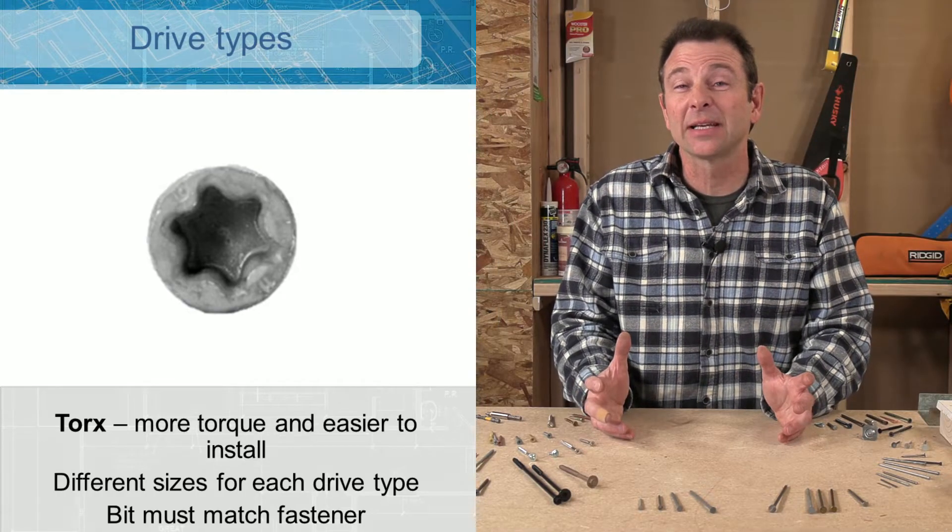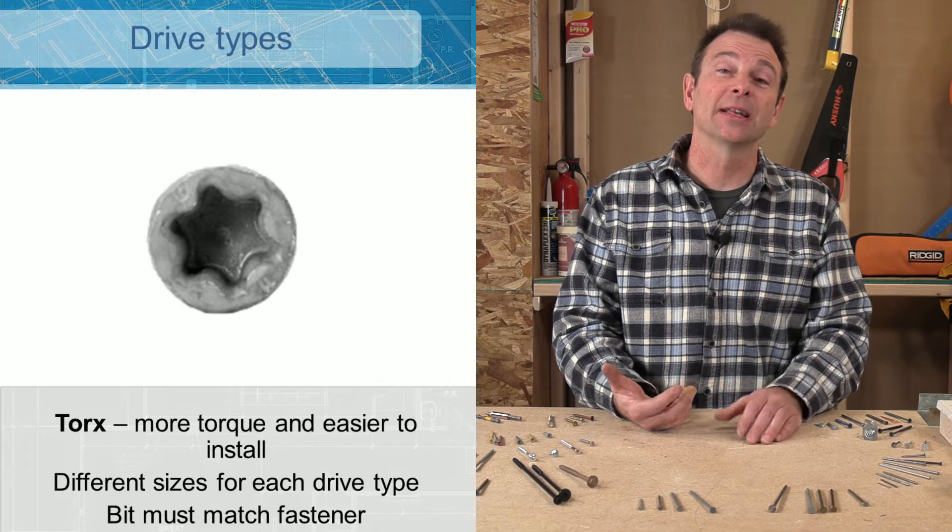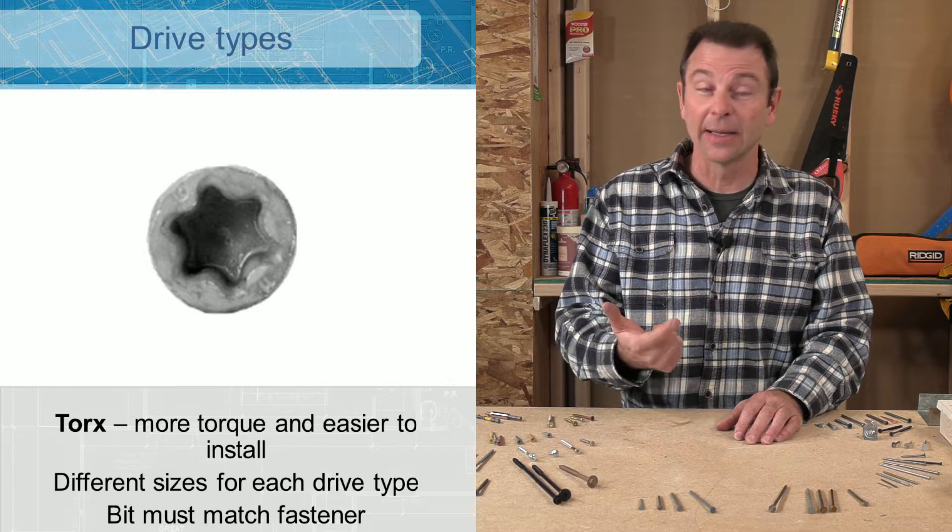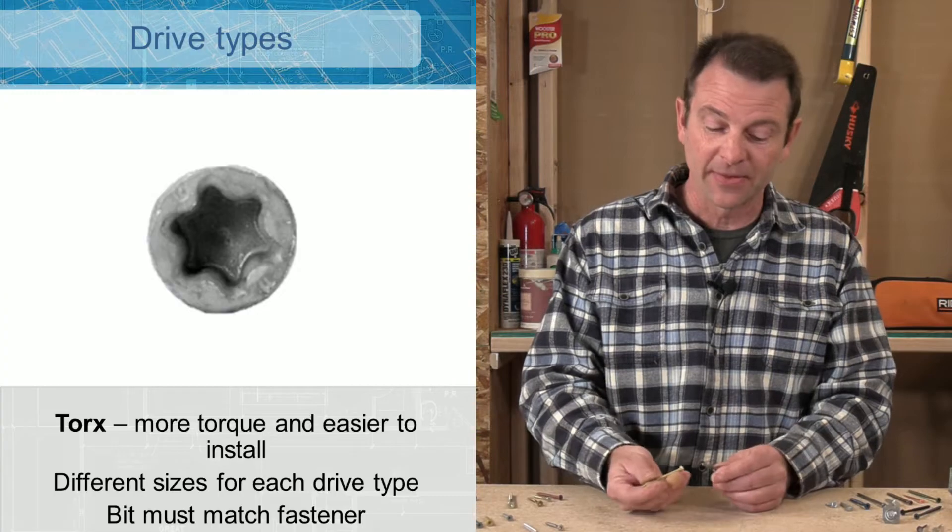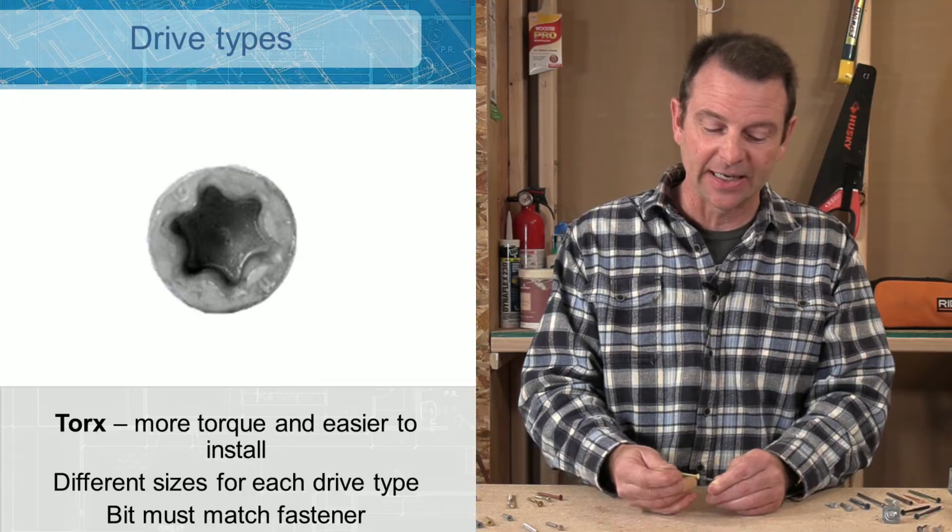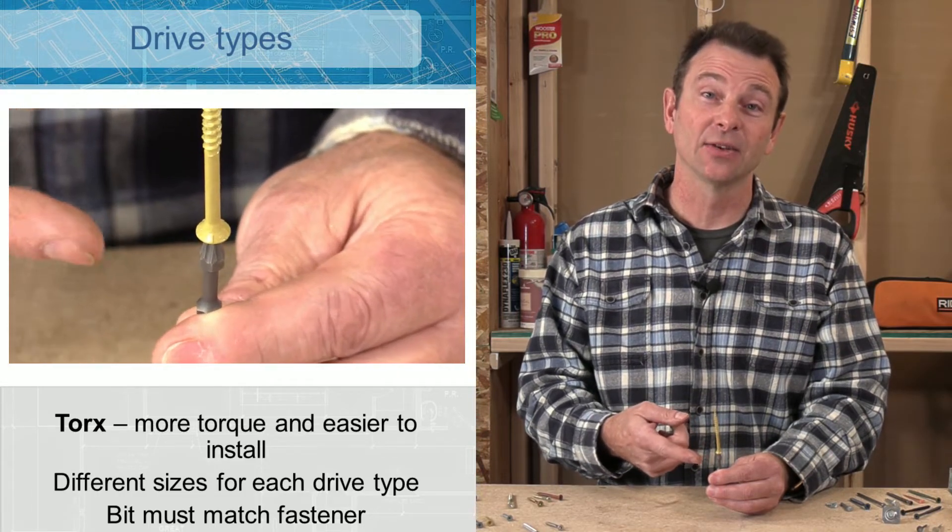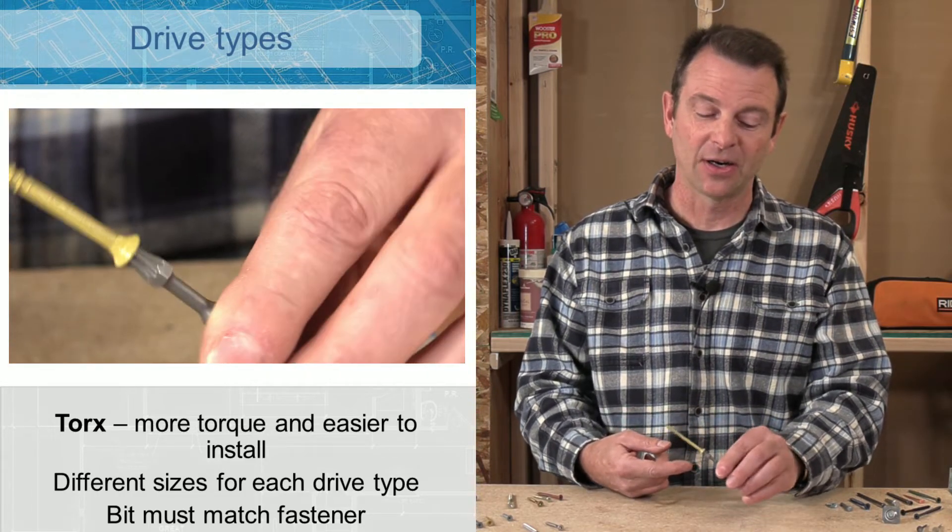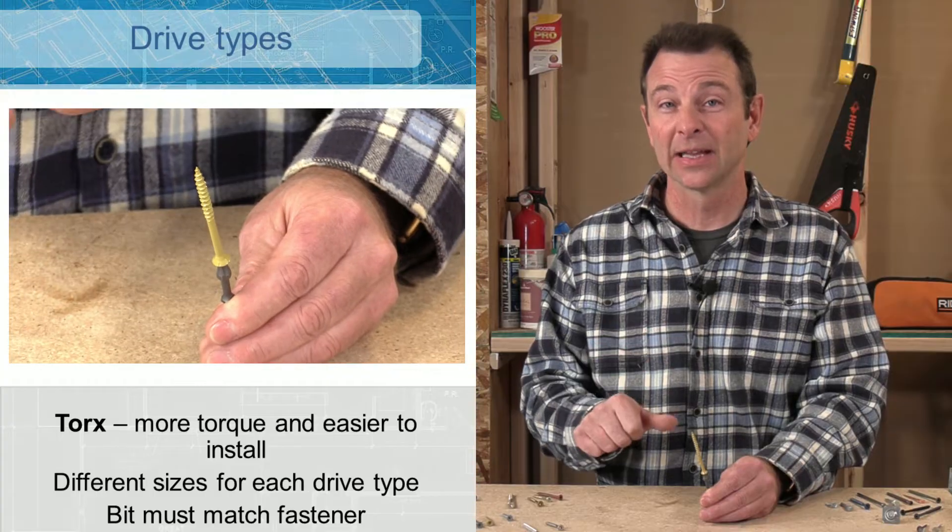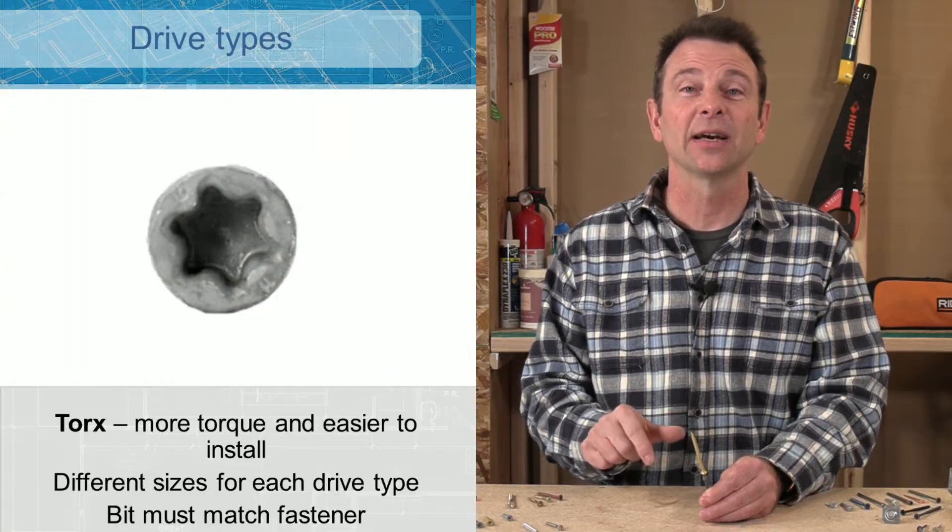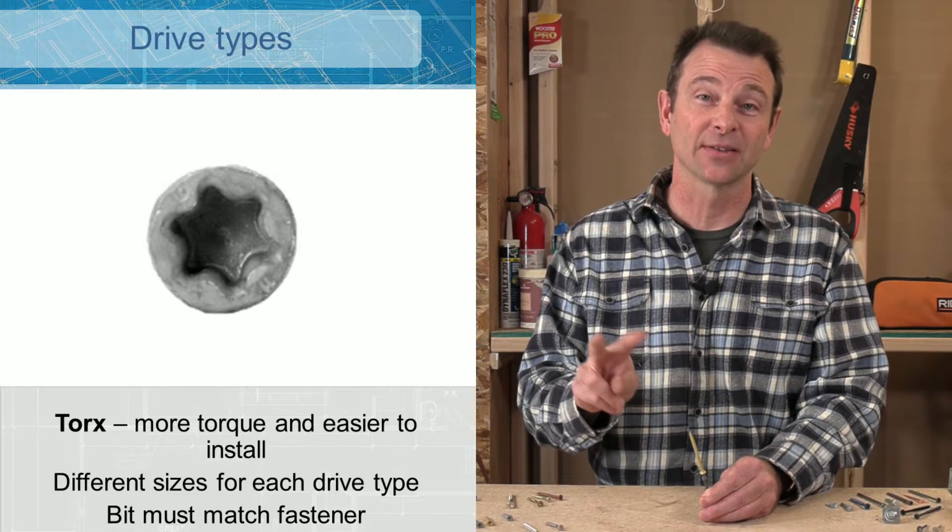One other thing to mention about driver bit types is you not only need to know the correct style of driver bit, but the size becomes a really important decision to make. So one quick rule of thumb is that the driver bit needs to fit tightly. If you cannot get the fastener to fit snugly on the driver tip without falling off, chances are you've got the wrong size. So there are different size Torx, there's different size Phillips, and each driver type will have different sizes. So make sure you're able to identify and correctly match those up as well.